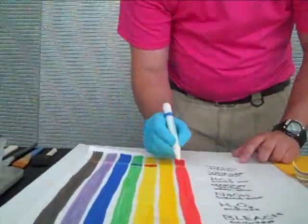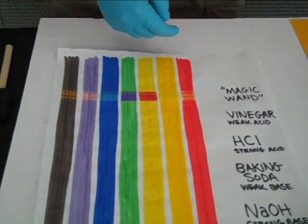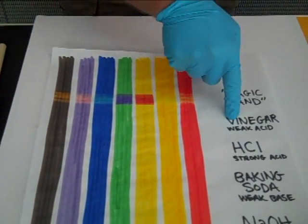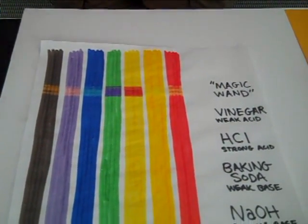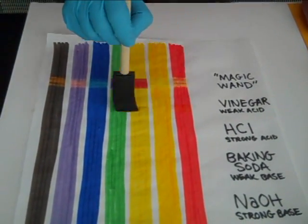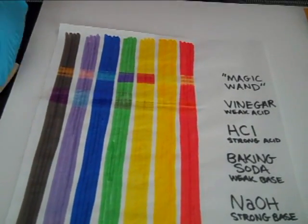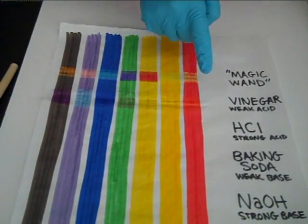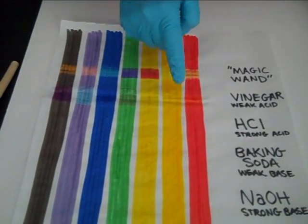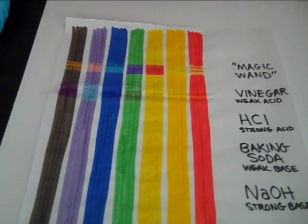So there's our original mark. What we're going to do to find out what's inside that marker is test vinegar. I'm going to do that first. So vinegar is an acid and it changed it a little bit, not too much though.